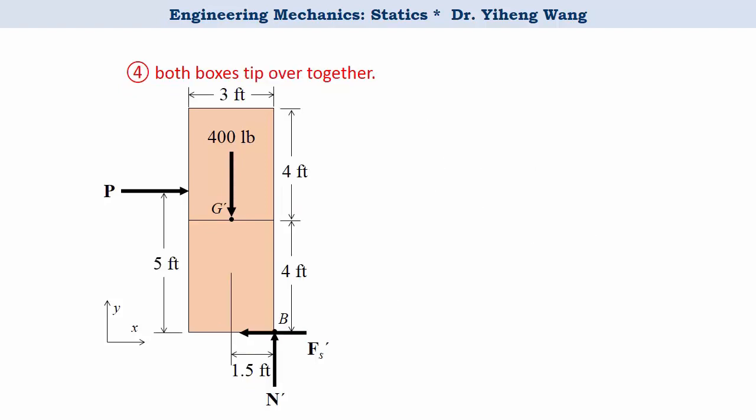Lastly, let's consider the situation when both boxes tip over together. We sketch the free body diagram by treating both boxes as one system, positioning the normal force N' at the edge of the box at point B. The useful equation here is the moment equilibrium equation: resultant moment about point B = −P·(5 ft) + 400 lbs·(1.5 ft) = 0, and from this we solve for the applied force P to be 120 pounds.